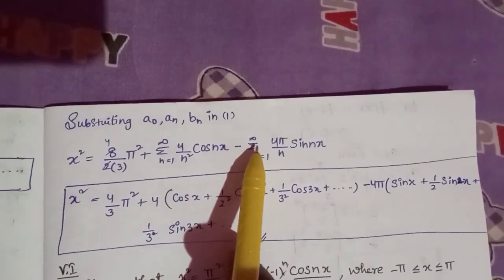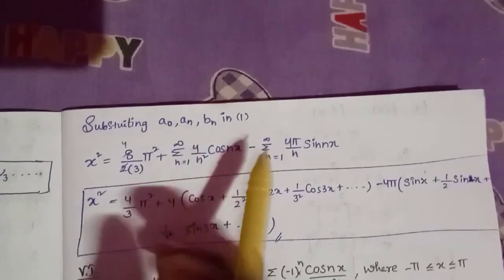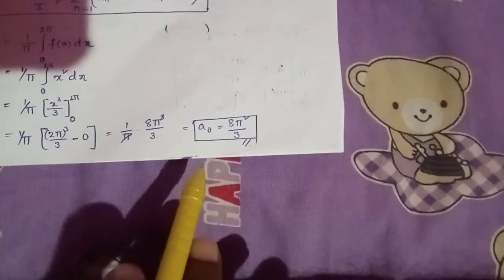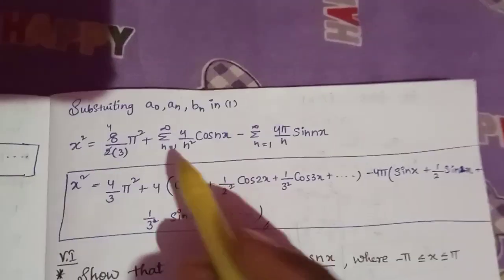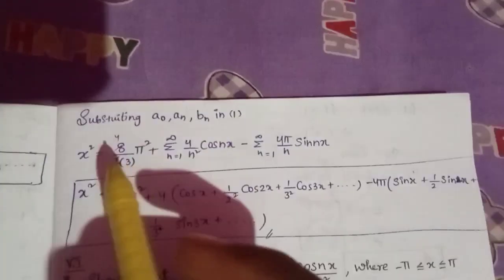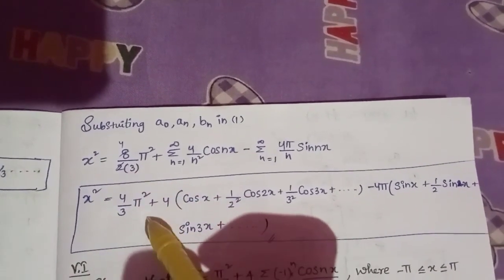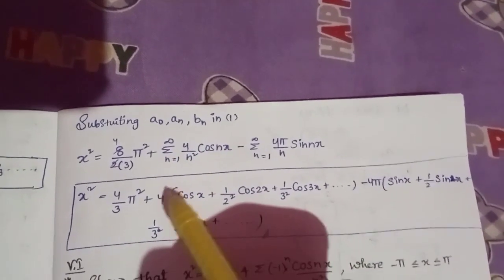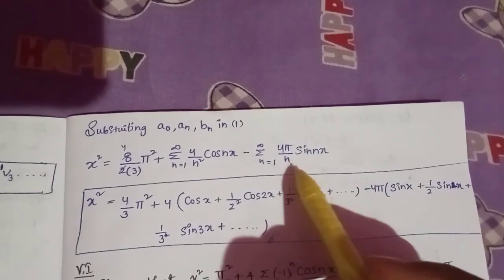Last step: substituting a0, a_n, and b_n into equation 1. We have x² equals a0 by 2 plus summation. a0 is 8π² by 3, so a0 by 2 is 4π² by 3. a_n equals 4 by n². b_n equals minus 4π by n. Substituting: x² equals 4π²/3 plus summation of [4/n² cos(nx) minus 4π/n sin(nx)].